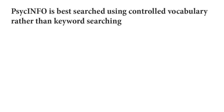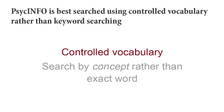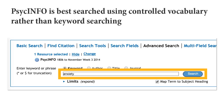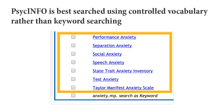One unique feature of PsychInfo is the ability to search for articles using a controlled vocabulary. A controlled vocabulary term searches for the concept rather than the exact word. When you enter a search term into PsychInfo, you will have an option in black text to search for the term as a keyword, as well as options for controlled vocabulary in blue text. More often than not, you will want to use the controlled vocabulary term in blue.